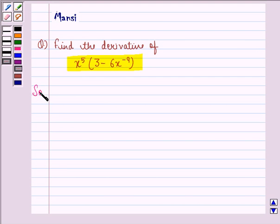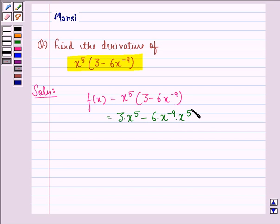Let us see the solution to this one. First of all, let f(x) be equal to x raised to power 5 into 3 minus 6 into x raised to power minus 9. Let us open the brackets and we get 3 into x raised to power 5 minus 6 into x raised to power minus 9 into x raised to power 5.